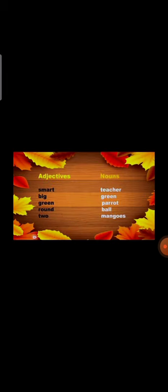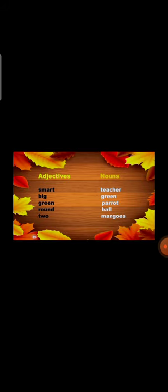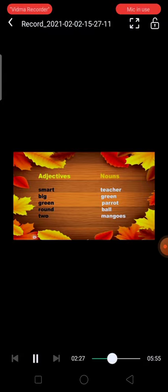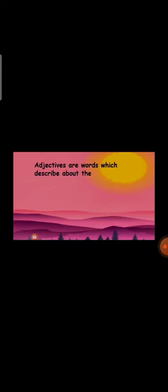Adjectives and nouns — in the first sentence, 'smart' is adjective, 'teacher' is common noun. 'Big' is adjective. 'Green' is adjective, 'parrot' is noun. 'Round' is adjective or describing word. 'Ball' is noun. 'Two' is adjective or describing word, 'mangoes' is noun. Describing words always describe the noun. Adjectives are words which describe the quality, size, color, shape, and number of a noun. Totally, it describes the noun.